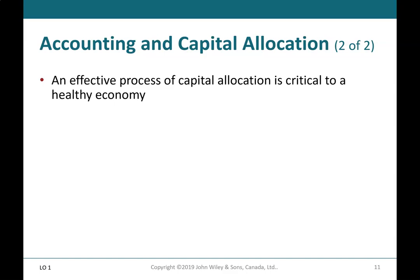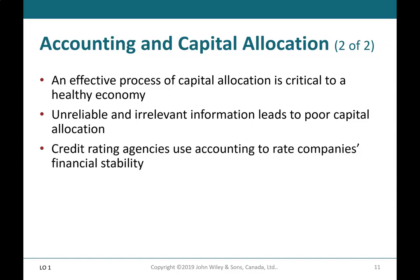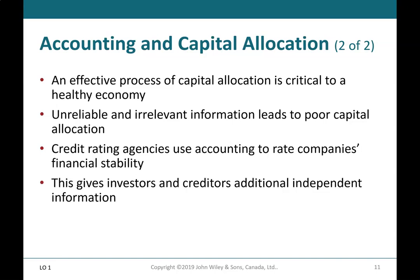An effective process of capital allocation is critical to a healthy economy. Unreliable and irrelevant information leads to poor capital allocation. Credit rating agencies use accounting to rate companies' financial stability, giving investors and creditors additional independent information.